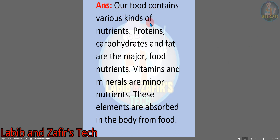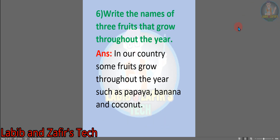Number 5: our food contains various kinds of nutrients. Proteins, carbohydrates, and fats are the major food nutrients. Vitamins and minerals are minor nutrients. These elements are absorbed in the body from food. Number 6: write the names of three fruits that grow throughout the year. In our country, some fruits grow throughout the year, such as papaya, banana, and coconuts. These are the questions given in the book.